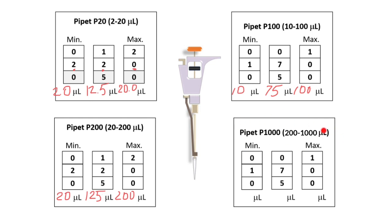The last micropipettor is going to be tricky — the P1000. We work with volumes between 200 and 1000 microliters. The first reading shown is just not possible, because it would mean 100 microliters, which is not something we would work with on this pipettor. The second one doesn't mean 75 microliters like on the P100; instead, it means 750 microliters.